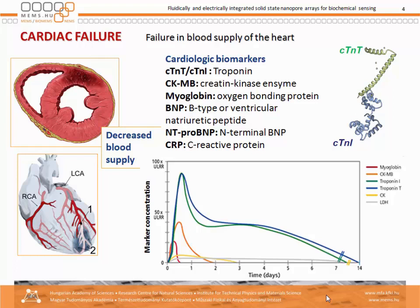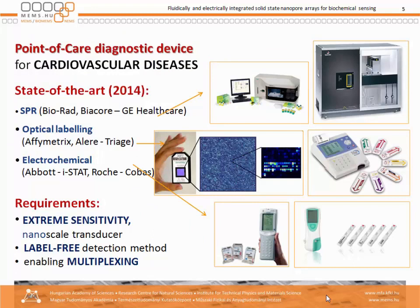Why did we select cardiac failure? Because this is a very appropriate way to show the usefulness of this system, although we are working on a platform which can be used for different other situations as well. The markers which appear in cardiologic problems are shown here according to the time delay of their concentration changes, and we see that troponin I and T are the mostly used markers. There are point-of-care diagnostic devices available in the market — mostly tabletop devices, but also palm-top devices.